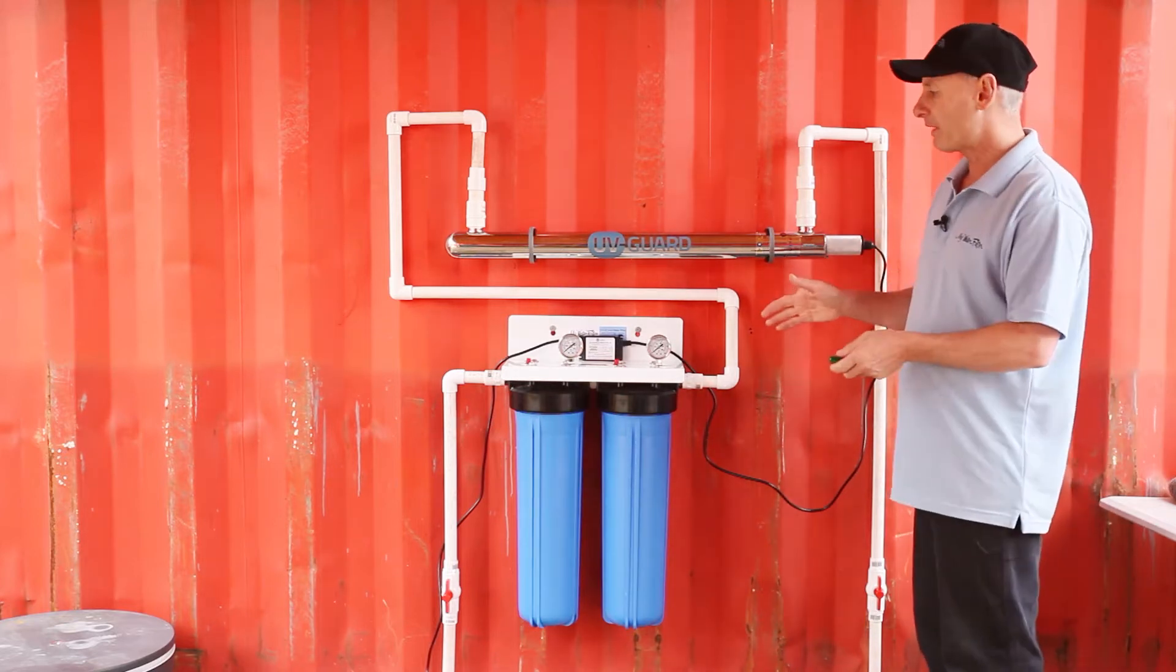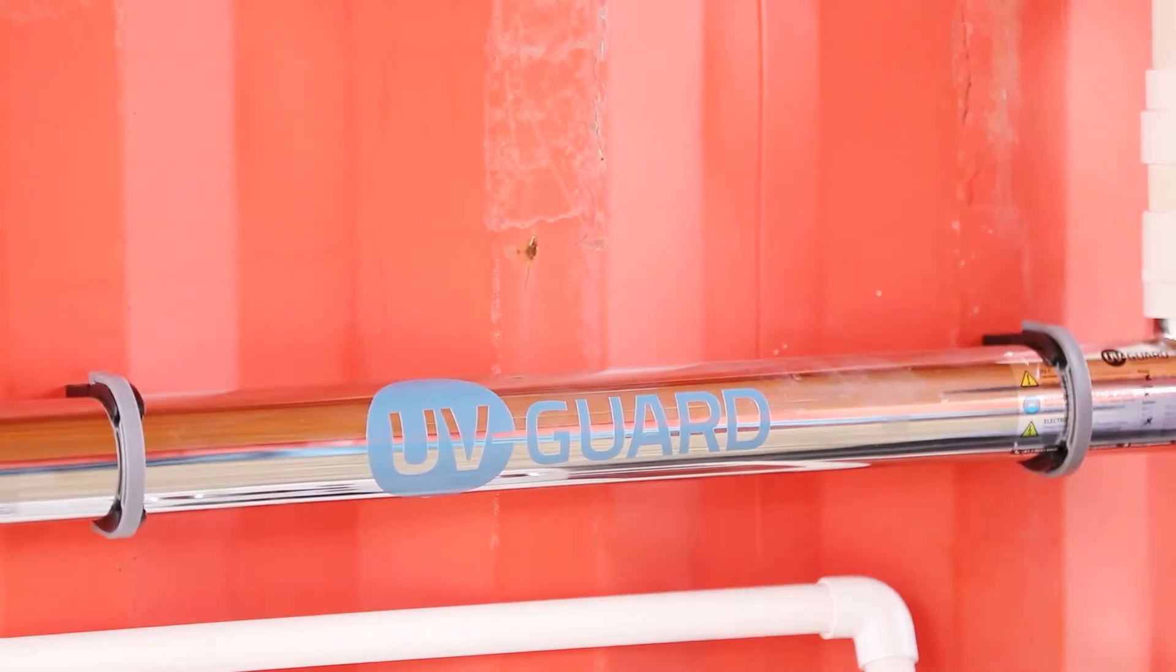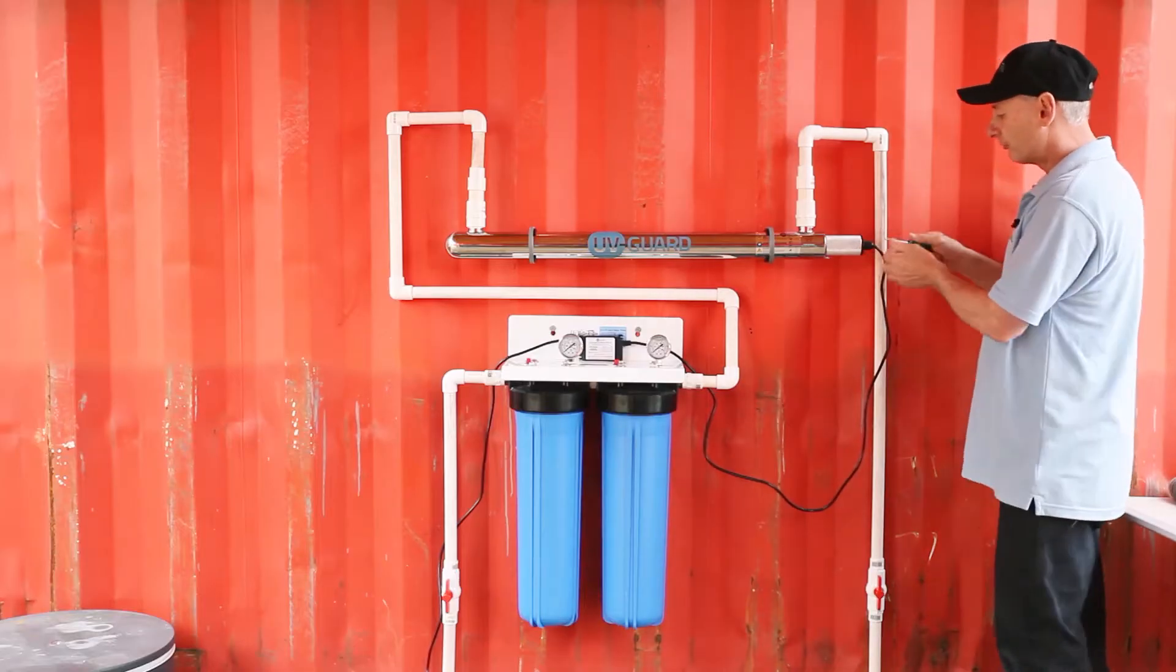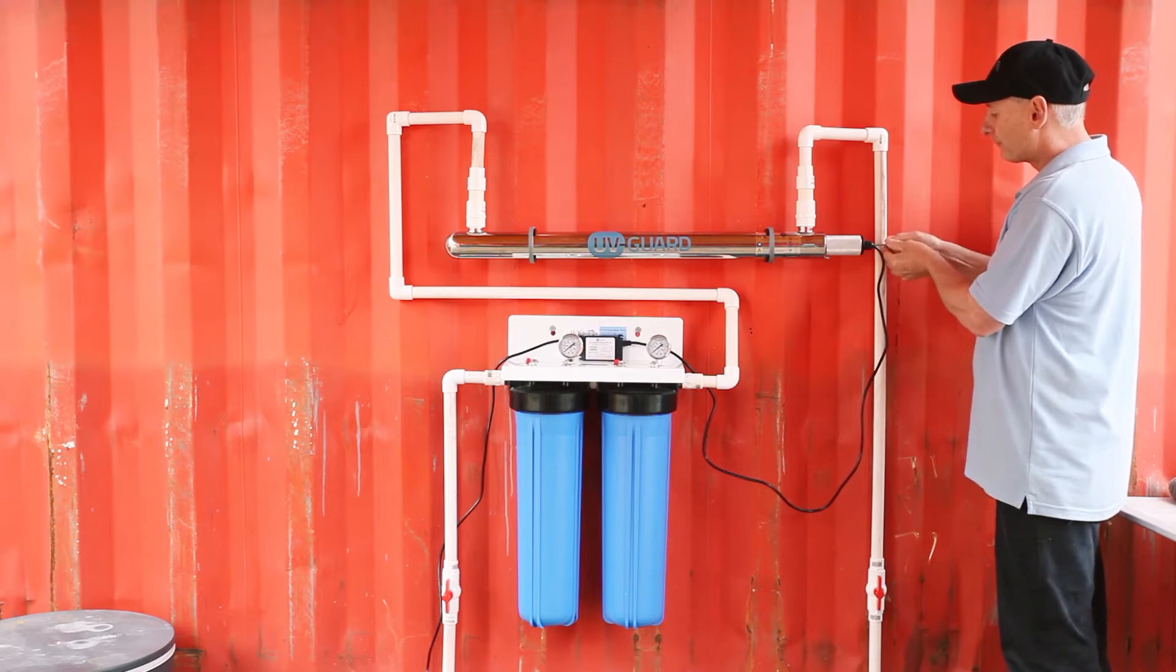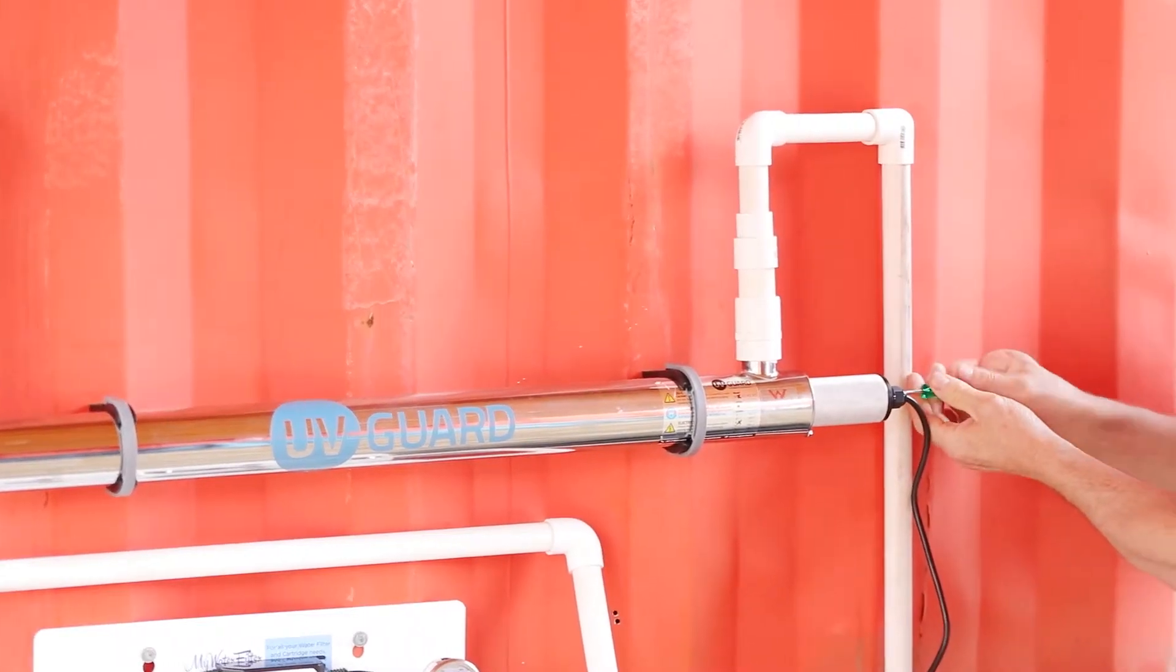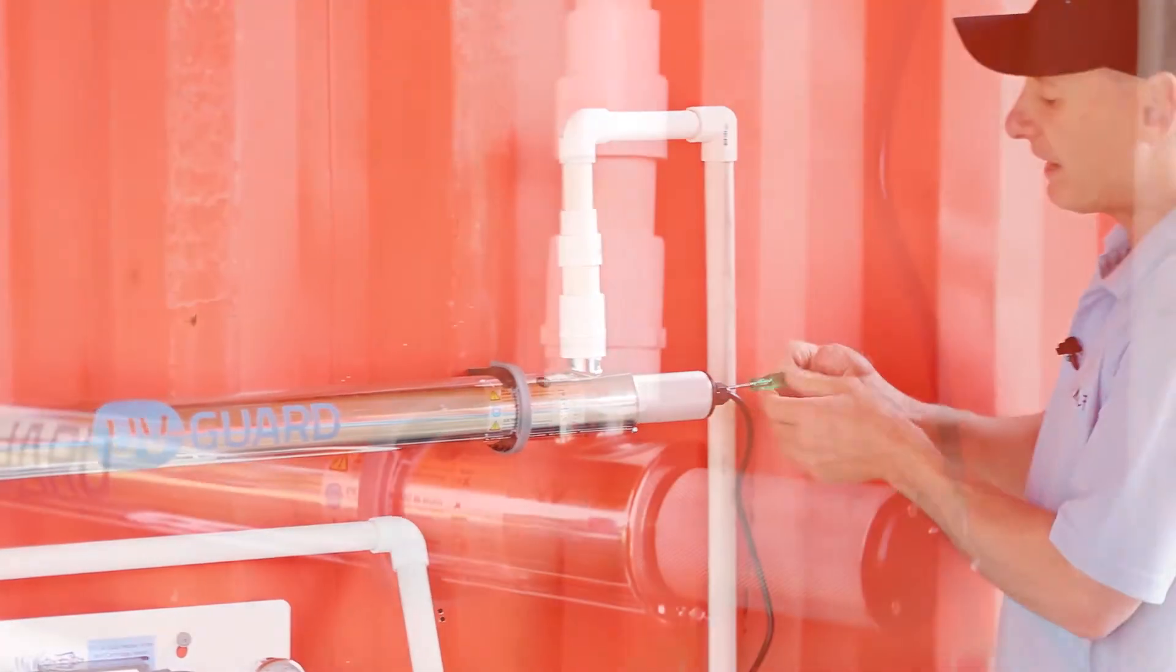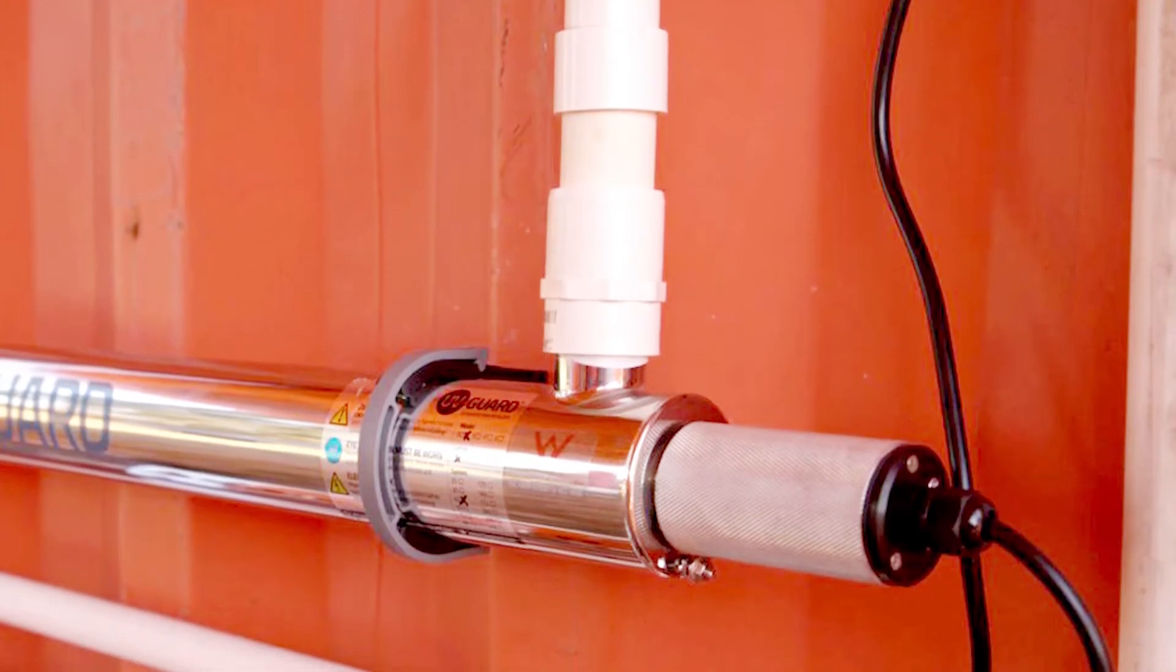So I've turned the power off, she's cooled down, it's all good to go. First thing I'm going to do is get the little Phillips screwdriver and take the electrical attachment off the end.